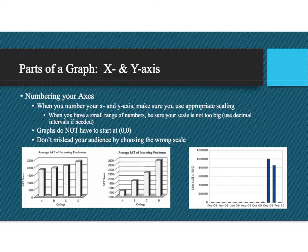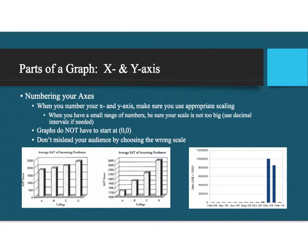Once you've drawn your X and Y axis and labeled them with the name for each variable and the units, now you can number your X axis and your Y axis. Here's something to remember about numbering: when you number your axis, make sure you use appropriate scaling. This is key. If you have a small range of numbers, you want to make sure your scale is not too big so that all your data isn't really really low.